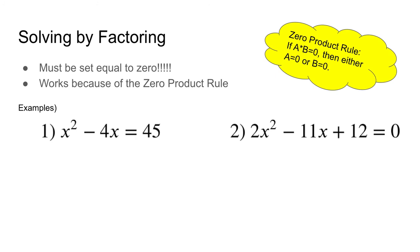This brings us to our third and final method of solving a quadratic equation today: solving by factoring. It's got to be set equal to 0 — if you don't set it equal to 0, you can't solve it by factoring. This works upon something called the zero product rule. The zero product rule says if two things multiplied together equal 0, then one of those two things must equal 0.